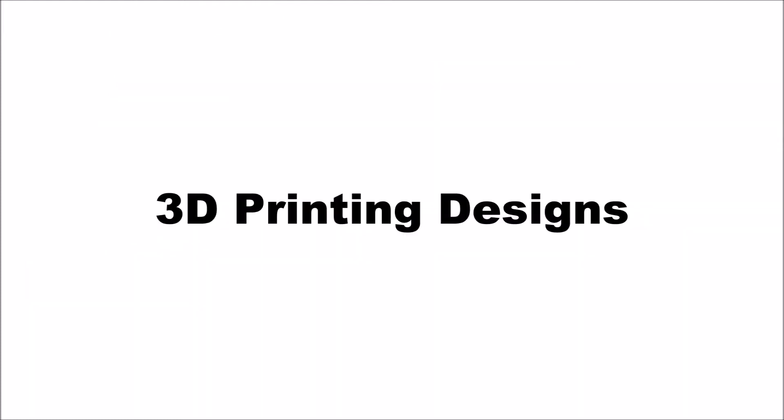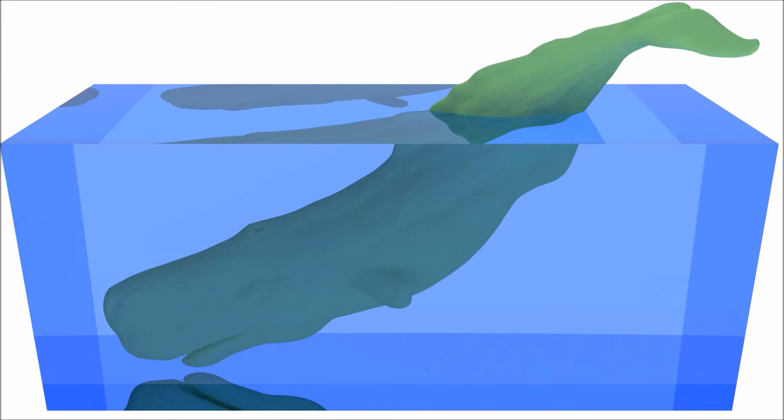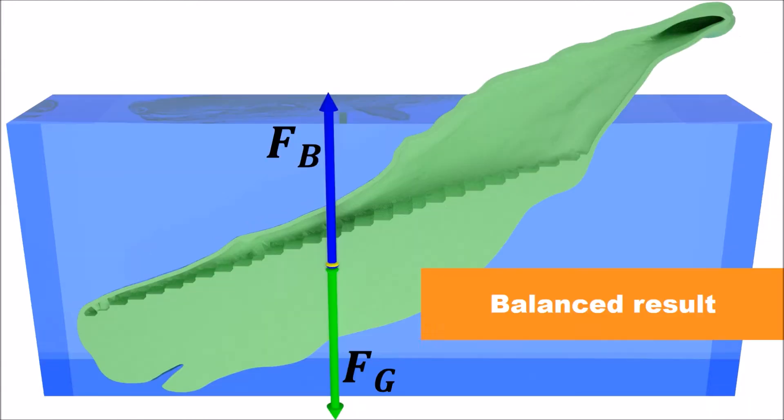We present some results for 3D printing. User places a whale model in fluid. After the optimization, part of the interior of the whale is hollowed away to satisfy all design constraints. The whale can float in the desired way and is stable under touching and pushing.